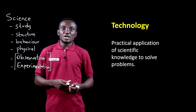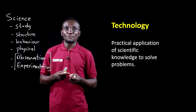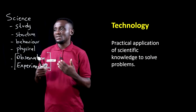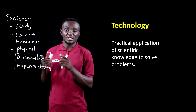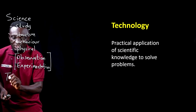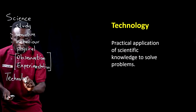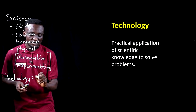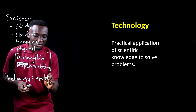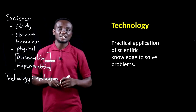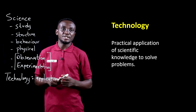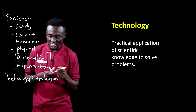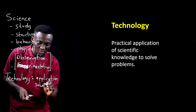Technology, on the other hand, has to do with the practical application of scientific knowledge to solve problems. Whereas science is looking at the structure and behaviour through study of the physical and natural environment, technology looks at the application — it is more of an applicative science. All the things we learn in science are applied with the aim of solving problems.